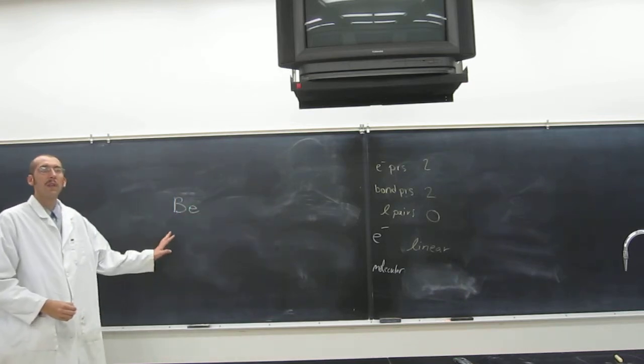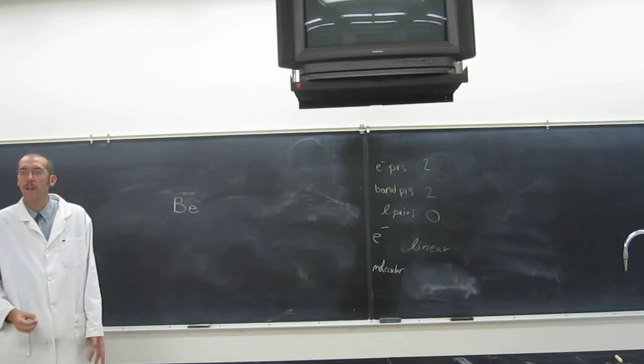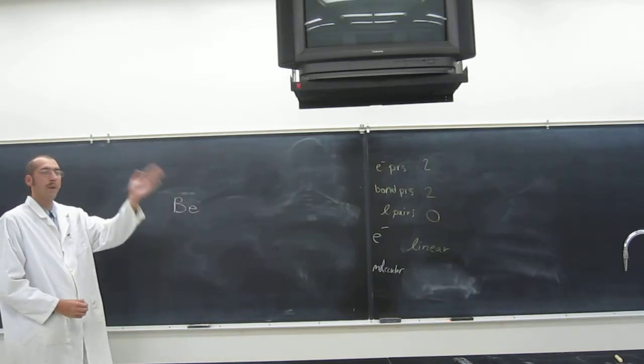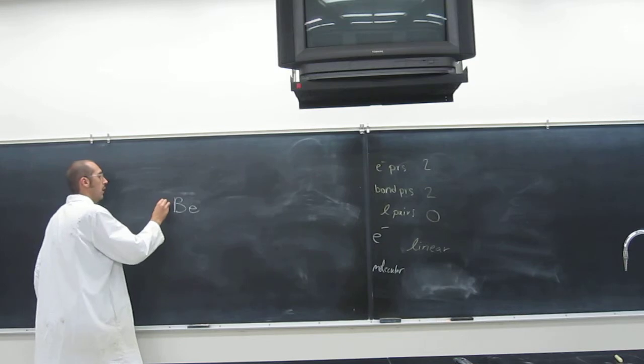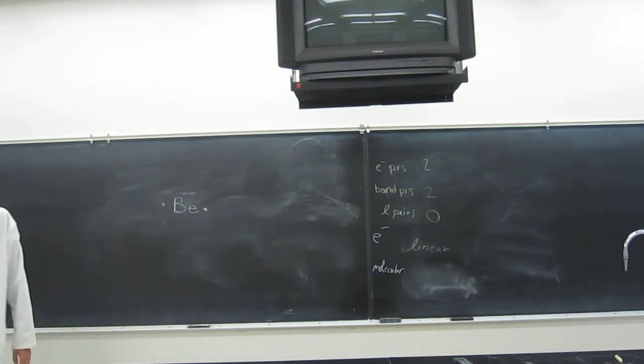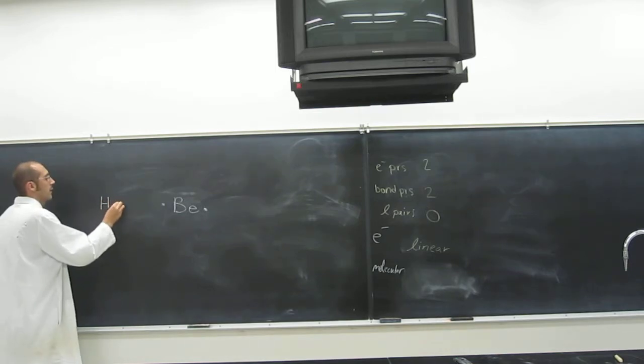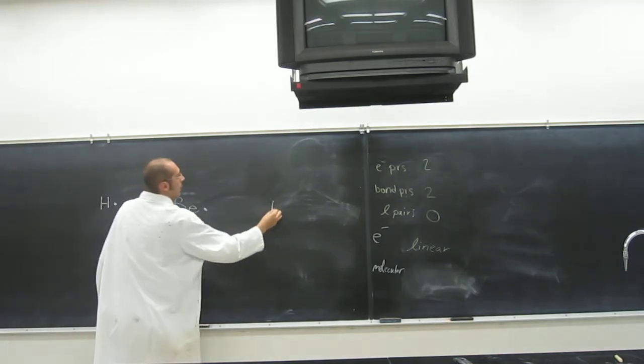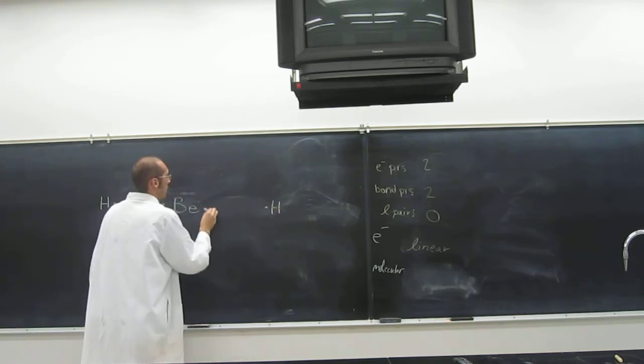And something like BE is going to have how many electrons? If we count them, one, two, right? Okay. So one, two, like that. And then hydrogen, of course, only has the one. Hydrogen has the one. BeH2.